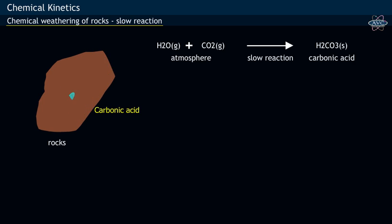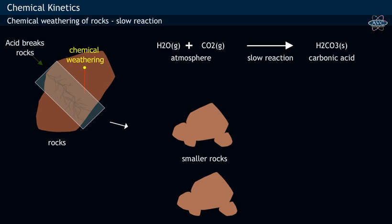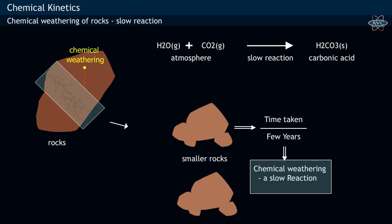Carbonic acid breaks the larger rocks into smaller rocks, and this process takes place over a few years of time. Hence chemical weathering is a slow reaction.